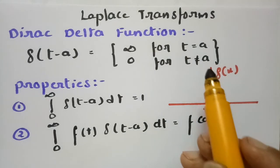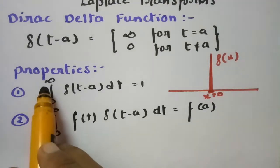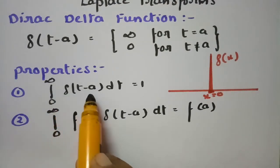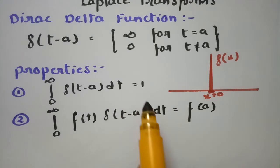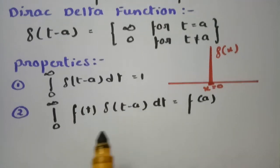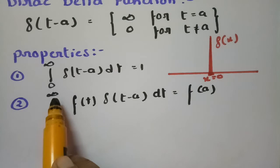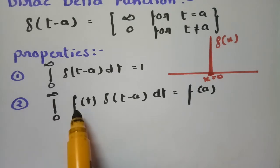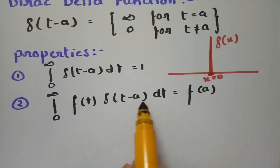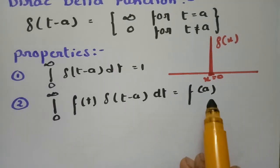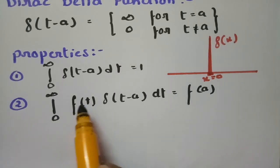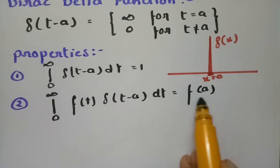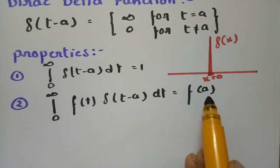There are two properties. The first is: the integral from 0 to infinity of delta(t minus a) dt equals 1, meaning the area equals 1. The second property is: the integral from 0 to infinity of f(t) times delta(t minus a) dt equals f(a). So if we multiply with a function, we get f(a) evaluated at t equal to a.